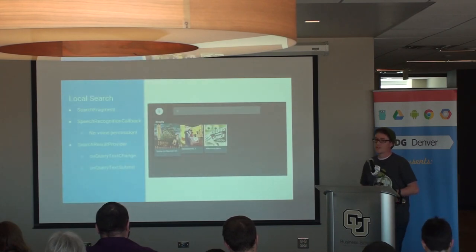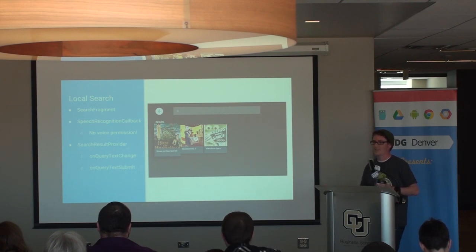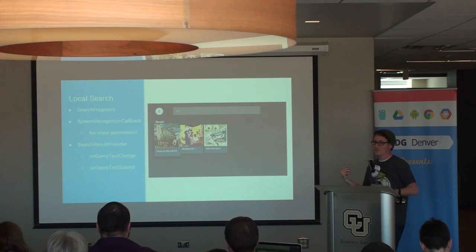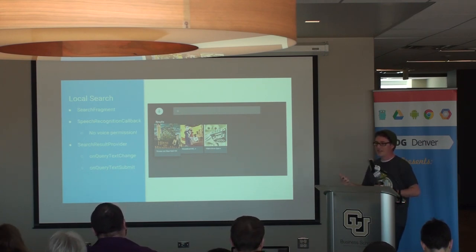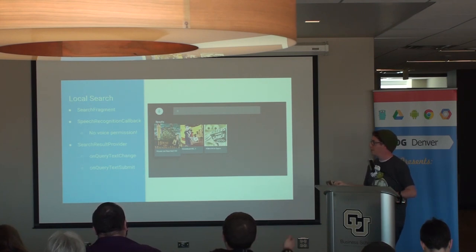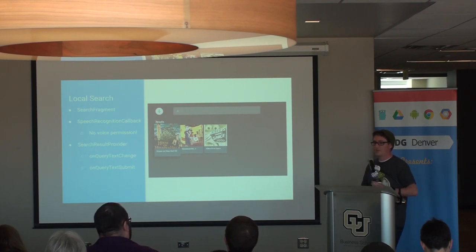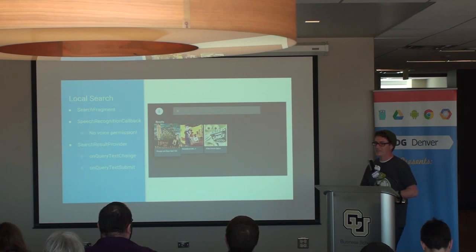You also have local search. If you're as big as Netflix, you don't want users to just browse — sometimes they want to find something in particular. You can implement the Search Fragment so they can type something in with a keyboard, use the D-pad on-screen keyboard, or use voice recognition. Because of Android M, a voice permission was added and a speech recognition callback was included, so you can use that without having to request speech permission from the user, which is pretty awesome.